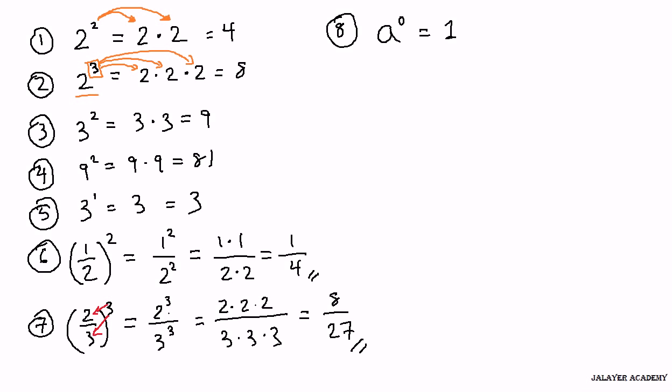2 to the 0 power is 1. Negative 3 to the 0 power is 1. 1 million to the 0 power is 1. The point is everything to the 0 power is 1.